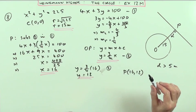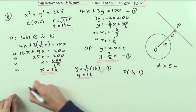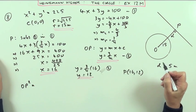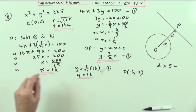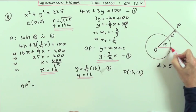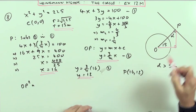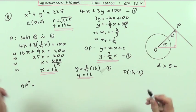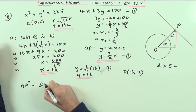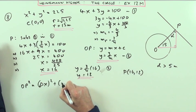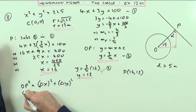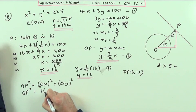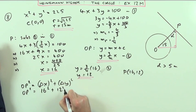What I actually wanted to know was the distance OP. So OP squared is the difference in the x's squared and the difference in the y's squared, using Pythagoras going from O to P. OP squared would be 16² + 12².